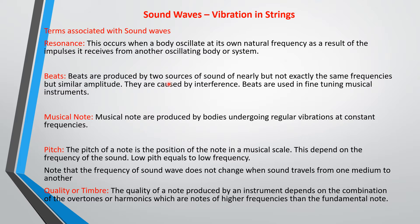Beats are produced by two sources of sound of nearly but not exactly the same frequencies but similar amplitude. They are caused by interference. Beats are normally used to fine-tune musical instruments. Musical notes are produced by bodies under regular vibrations at constant frequencies.